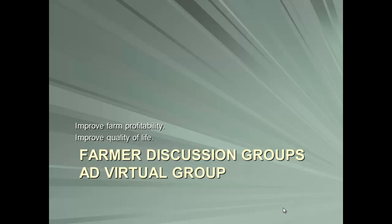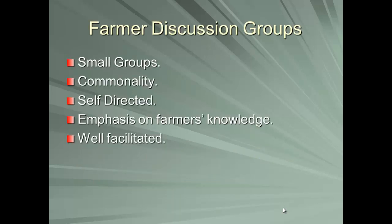Farmer discussion groups — I want to explain what they are so we're all on the same page, because there are different types of farmer groups. Some are more like profit teams or advisory teams where one farm is being analyzed by a group of consultants. This is a little different. These are discussion groups where a group of farmers gets together to discuss things pertinent to them. They're small groups, usually 5 to 15 people, and the concept is that you want people to be able to sit around the table and interact.